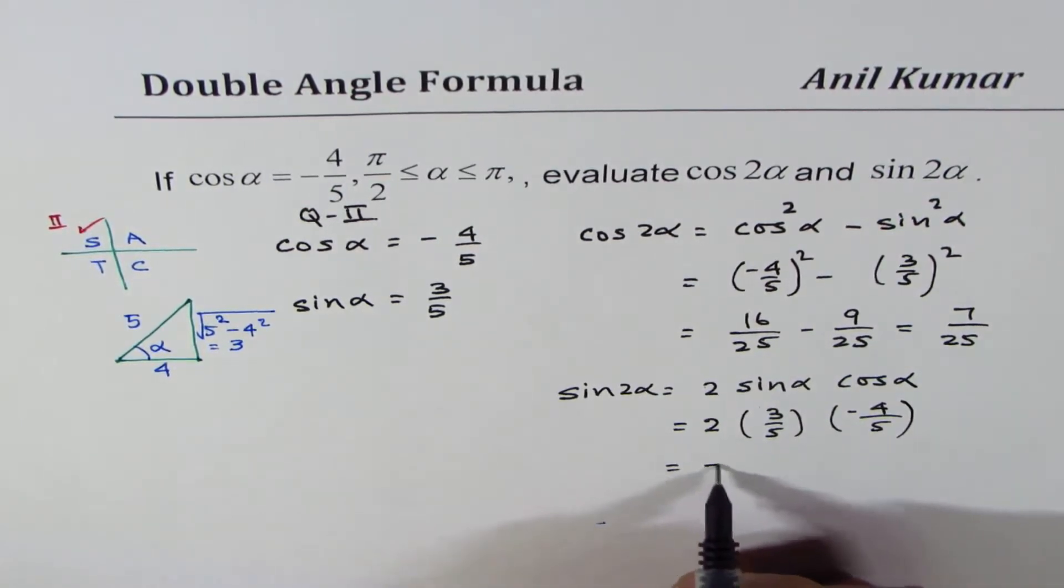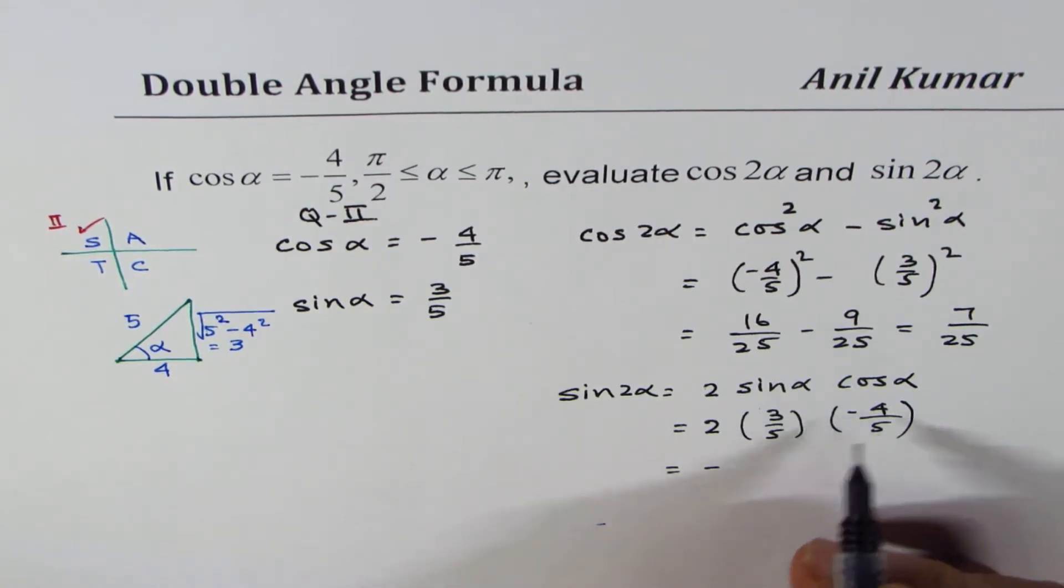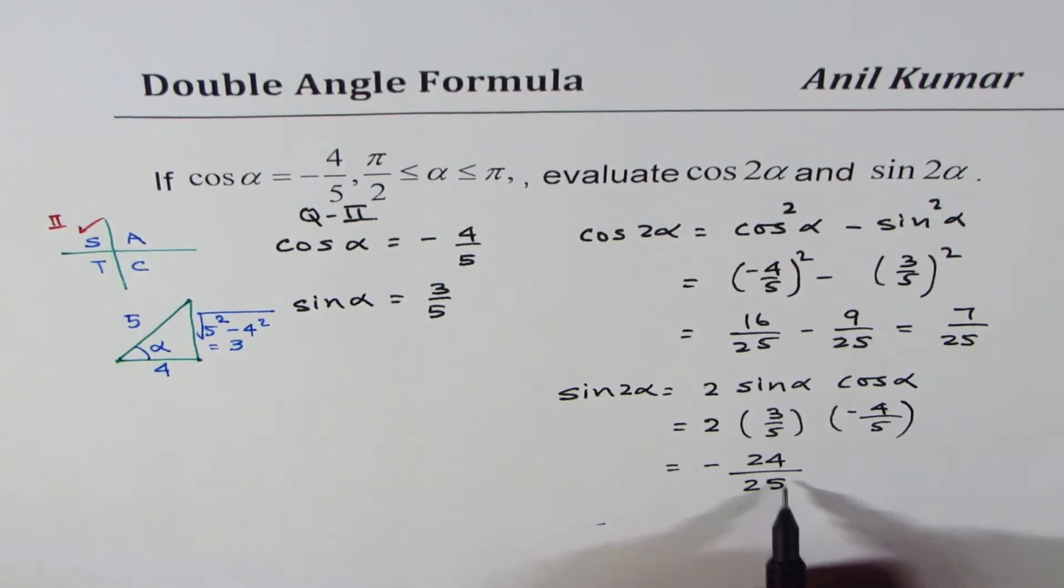So that gives you negative, and 2 times 3 is 6, 6 times 4 is 24, over 5 times 5, which is 25.